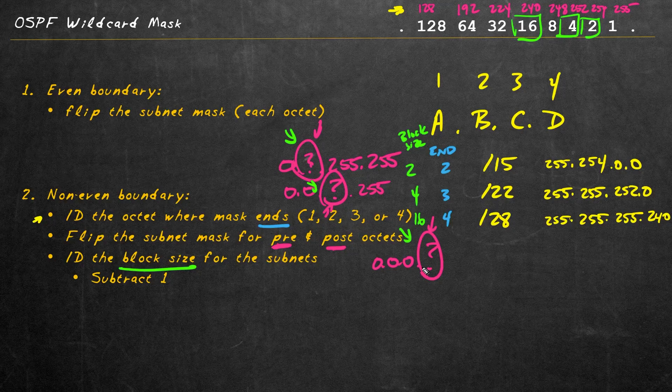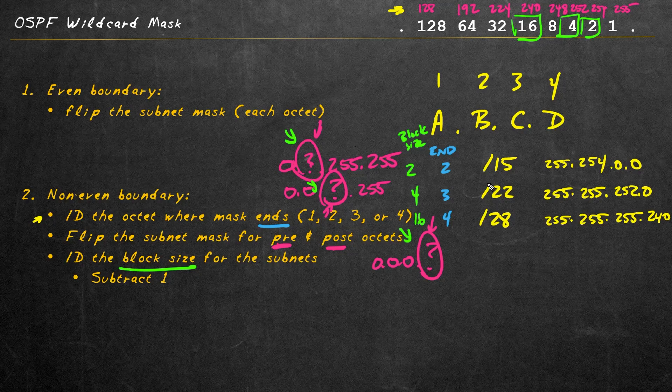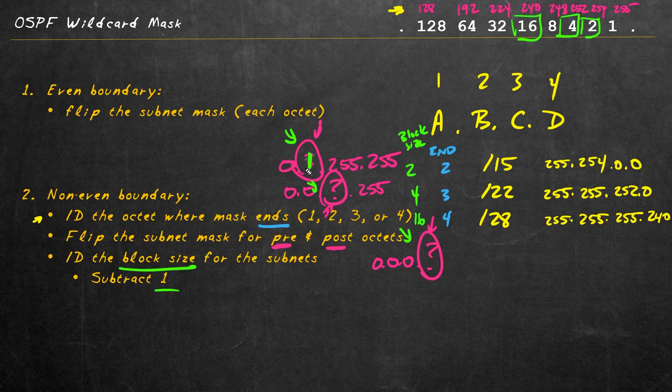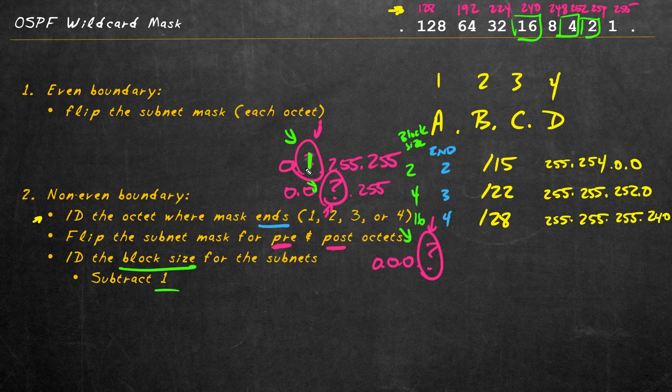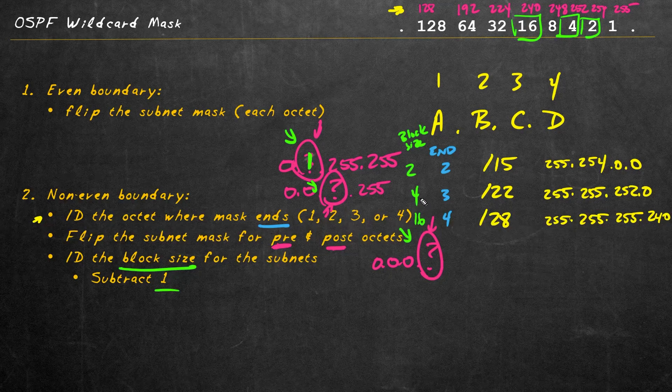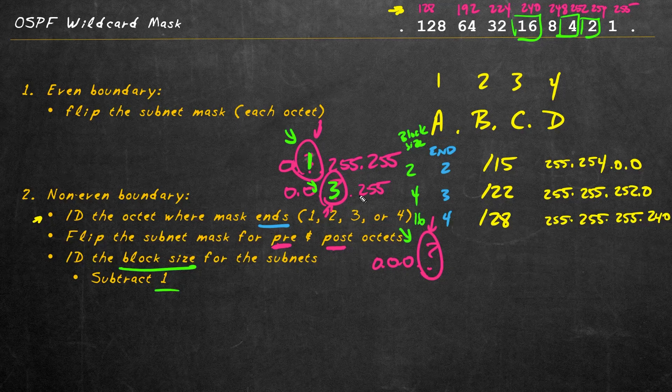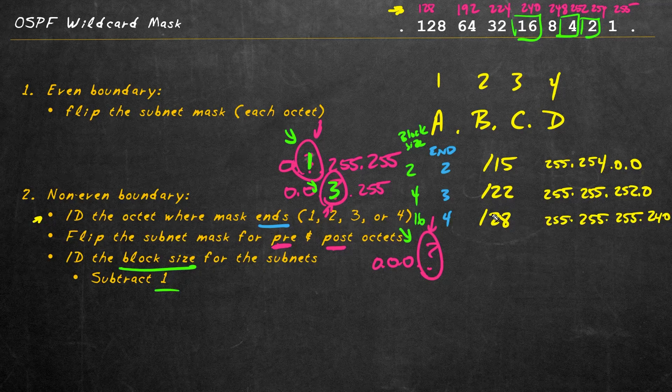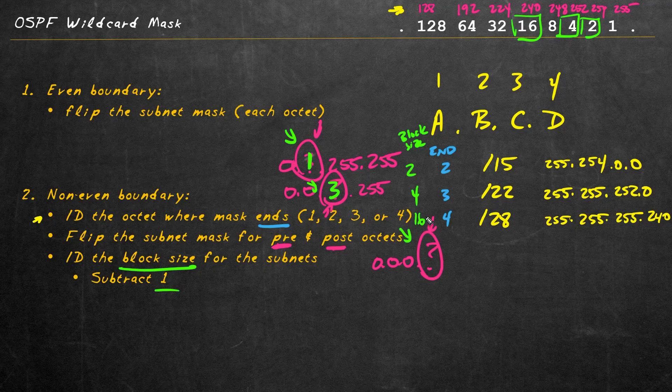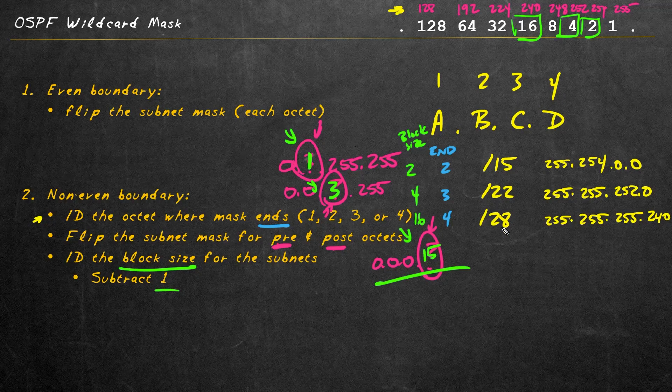And here's the shortcut: all we're going to do is take the block size for that given network and subtract one. And that's it. So for here, in this octet, we'd have a 1 there. That would be the wildcard mask for a slash 15. For the slash 22, because the block size is 4, we simply subtract one from that, that'd be a 3. That would be our wildcard mask for a slash 22. For the slash 28, because the block size is 16, we'd go ahead and subtract one from that, make that a 15. That would be our wildcard mask for a slash 28.